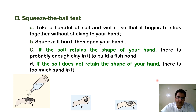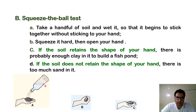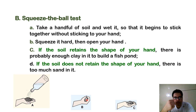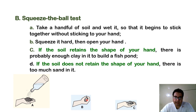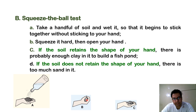The second important test is the squeeze-the-ball test. We take a handful of soil, sprinkle a little water on it, and squeeze it, then open our palm. If the soil retains the shape of the palm, then that soil is good. If it does not retain the shape of the hand, it has too much sand.